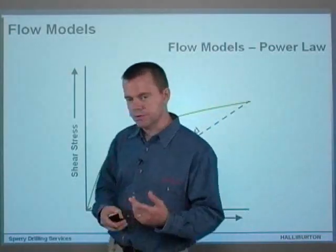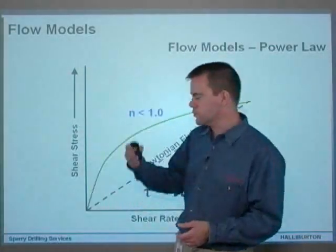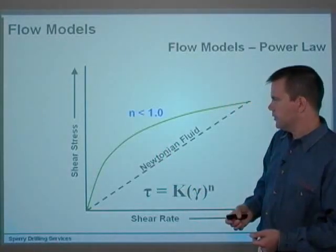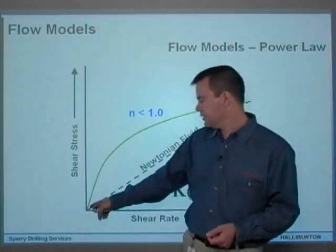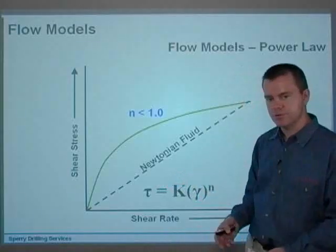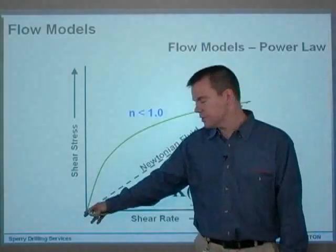Now, one of the things with Bingham plastic, the yield point was overestimated by 40 to 90%. Here, with the power law model, it's totally underestimated, because if it does have a yield point, the power law model has no provision for that. There is no way of adding a yield point in here.